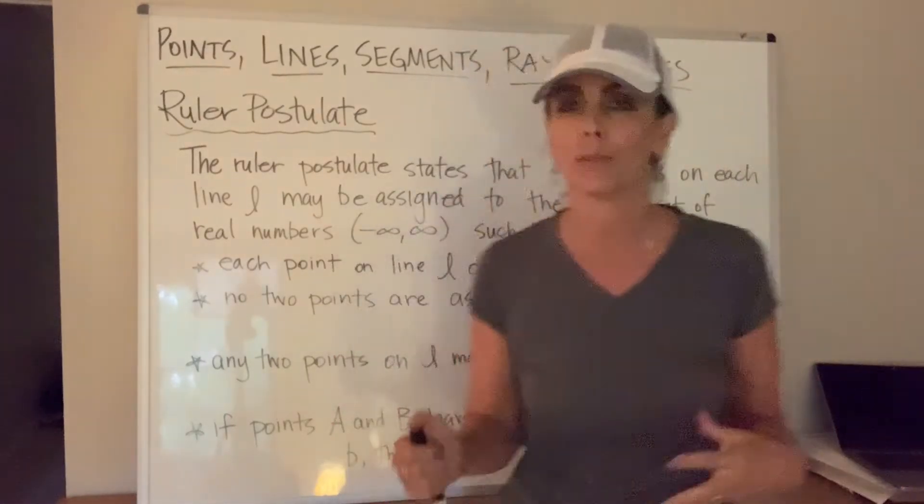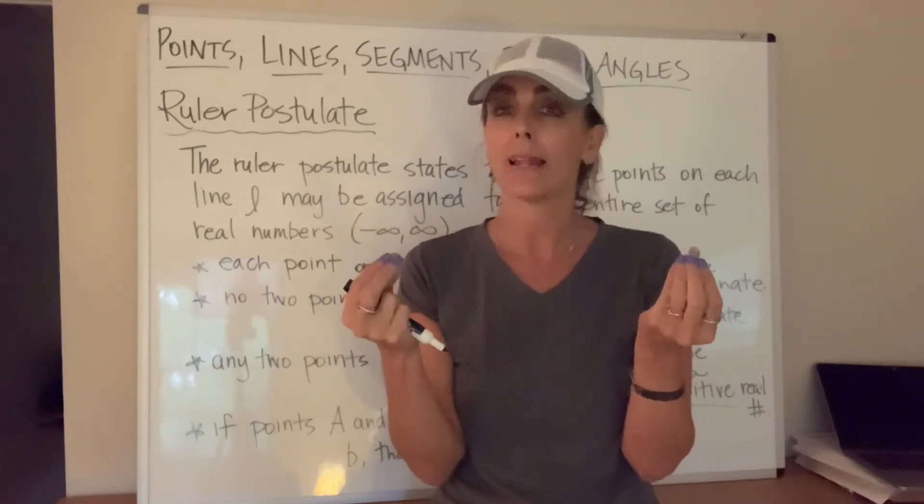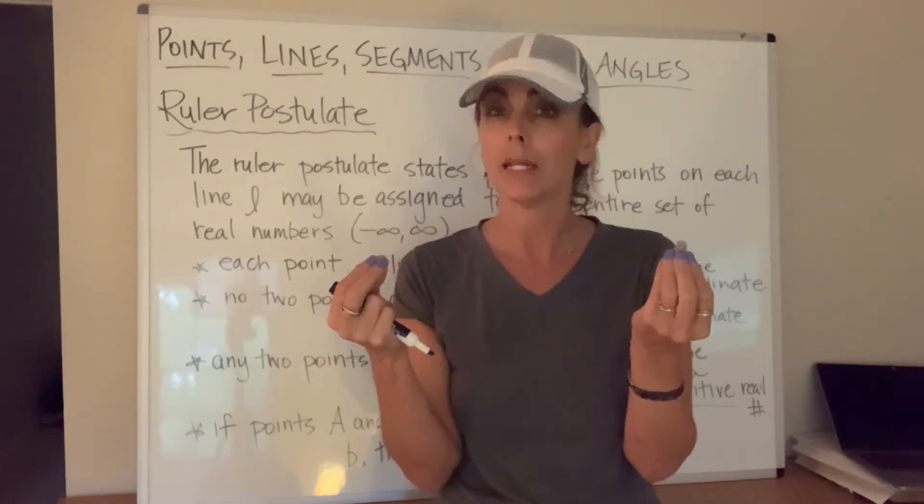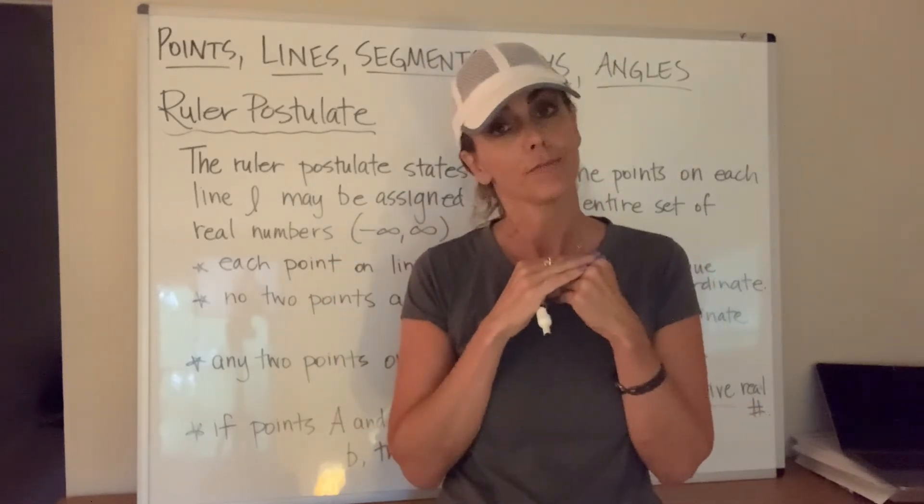What does that absolute value have anything to do with it? If I assign B to be something bigger than A and I do A minus B, I'm going to get a negative value. And distance, as you know, is always positive.